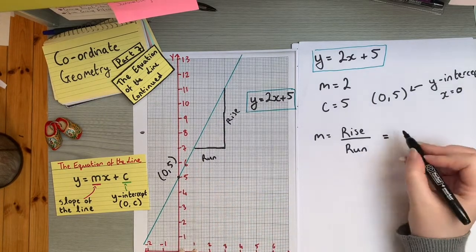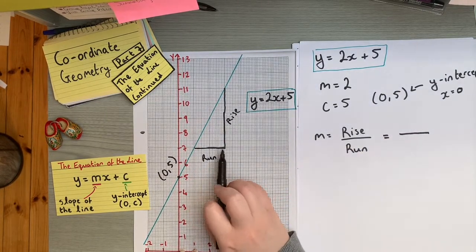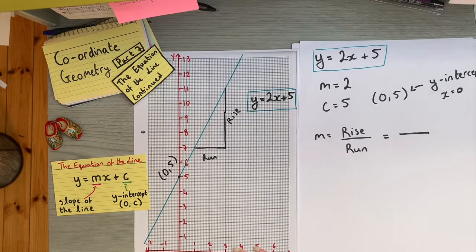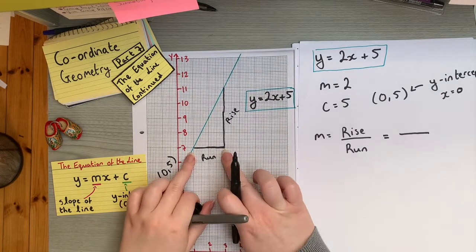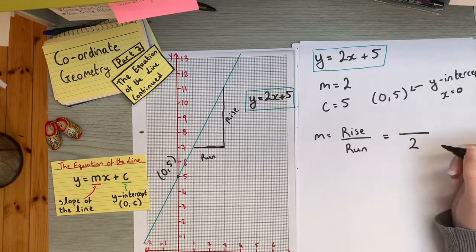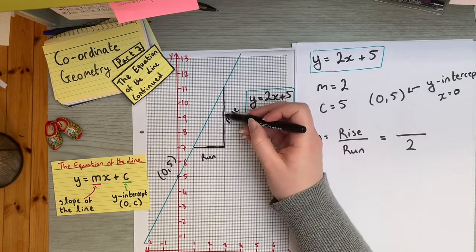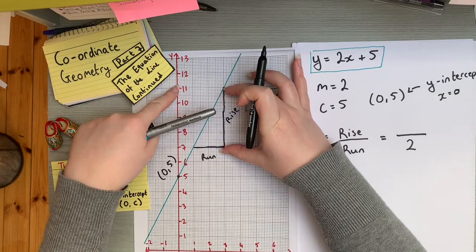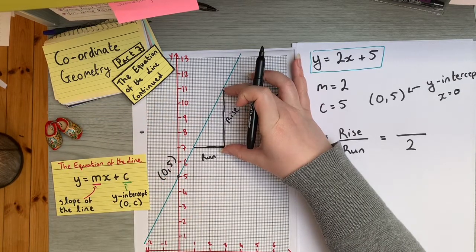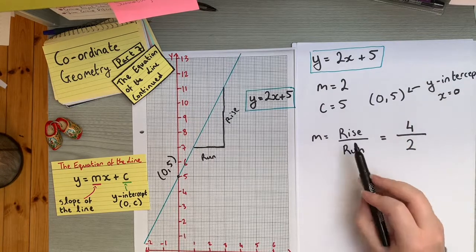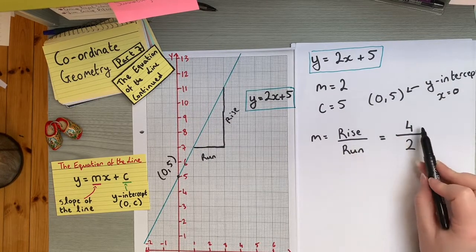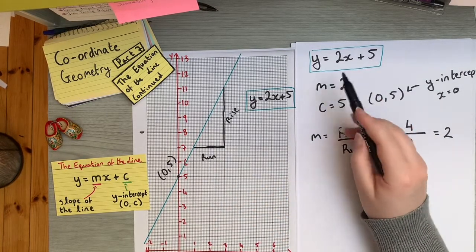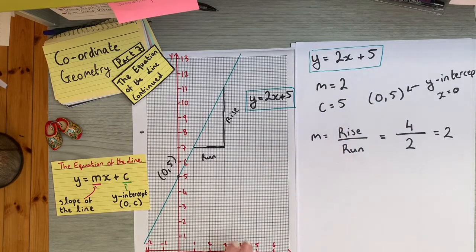Looking at the slope using the rise over run method: starting at a point and going across and up, the run is two squares — that's 3 minus 1 = 2 — and the rise is four squares, or 11 minus 7 = 4. So the slope is rise over run = 4/2 = 2, which matches what we predicted from the equation.